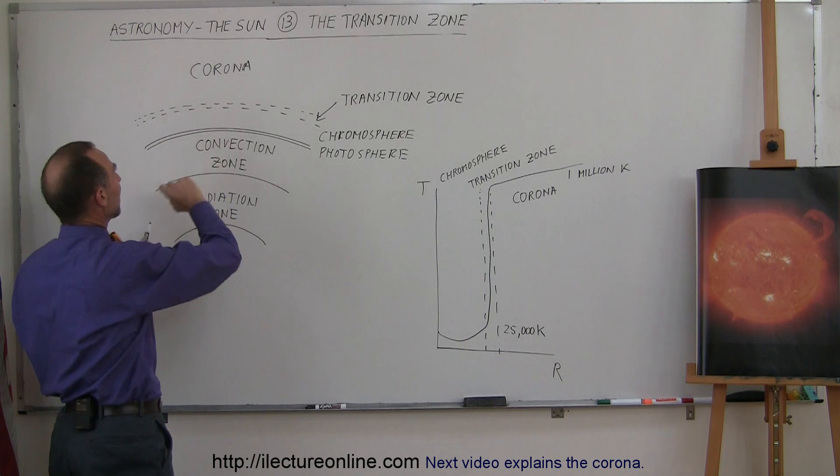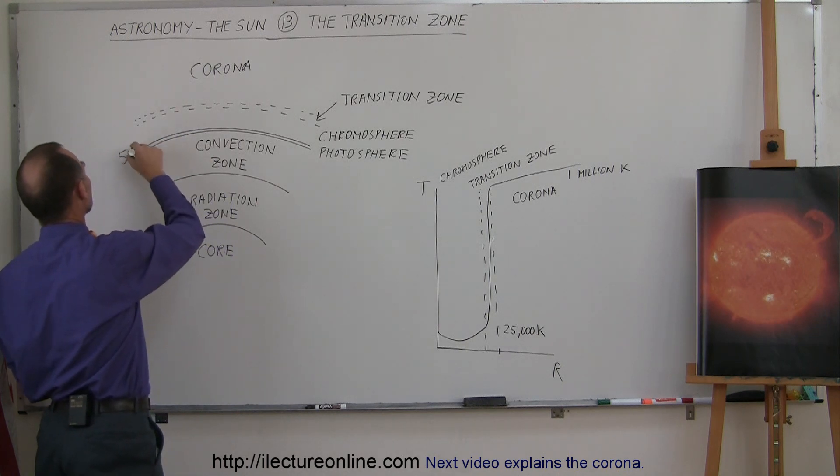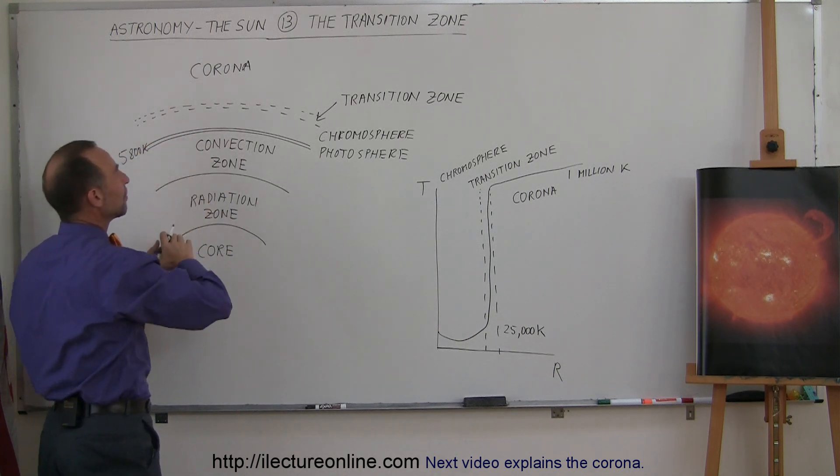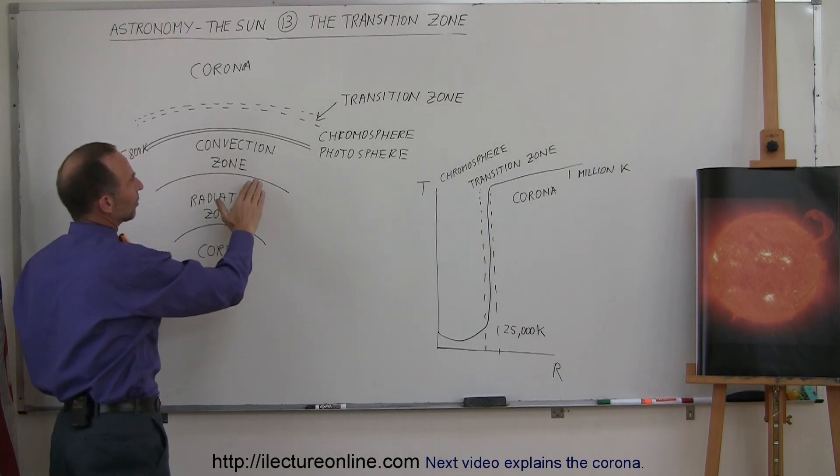Remember that the photosphere is about 5,800 Kelvin, and that the temperature in the chromosphere first takes a dip down to about 4,000 Kelvin. By the time you reach the edge of the chromosphere,